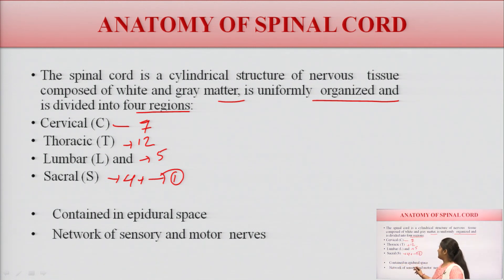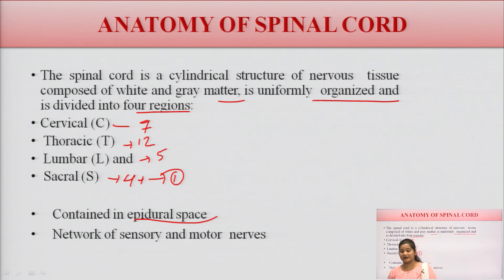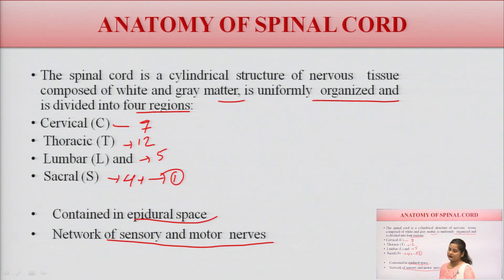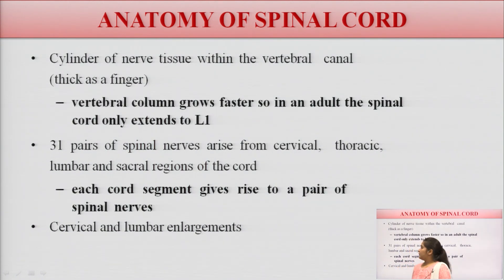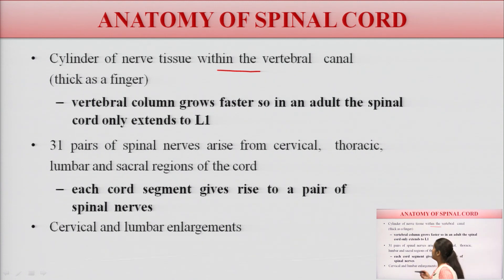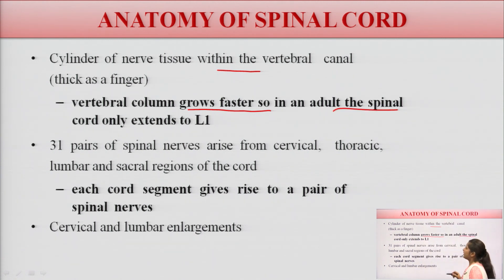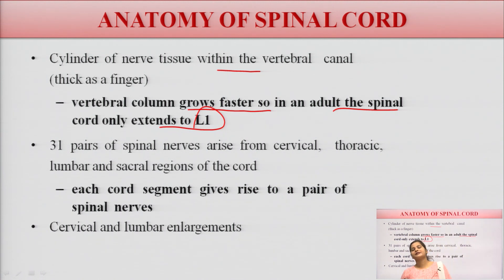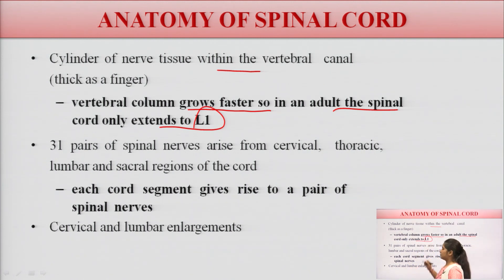The spinal cord contains epidural spaces, which form a network for the sensory and motor nerves. The cylindrical nerve tissue within the vertebral canal is about as thick as a finger. Because the vertebral column grows faster, in an adult the spinal cord only extends to lumbar one.